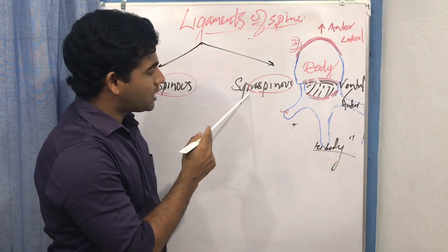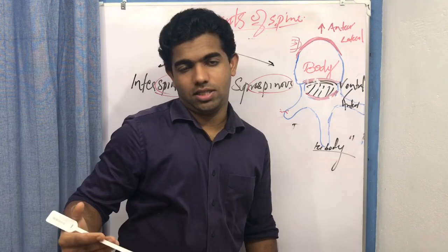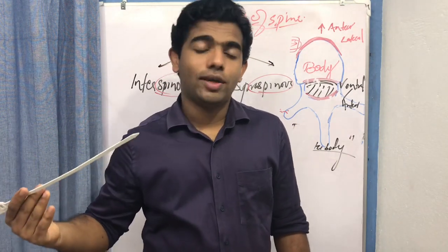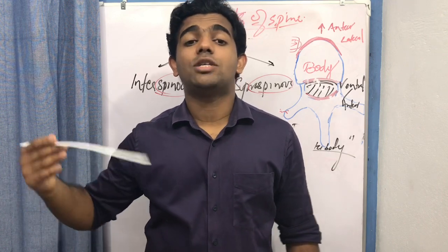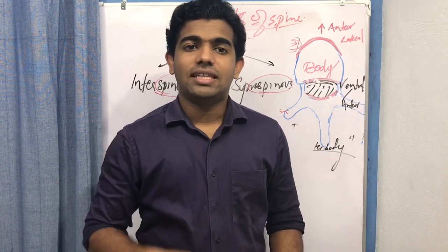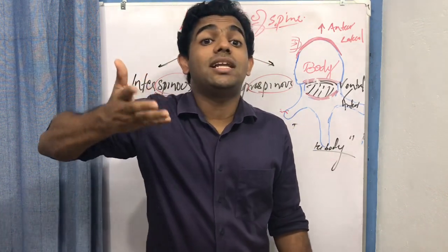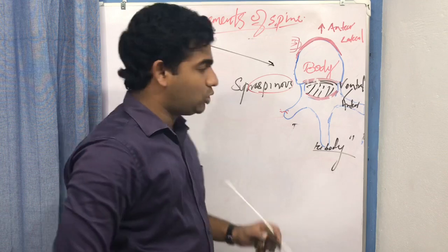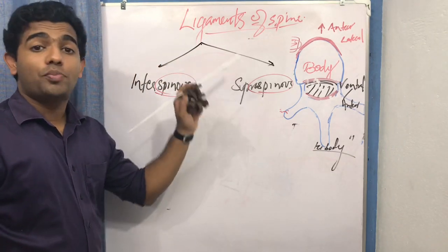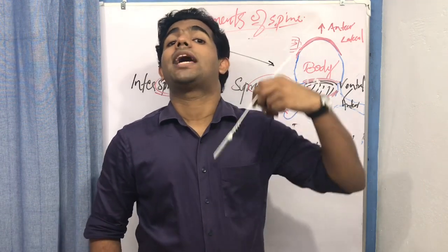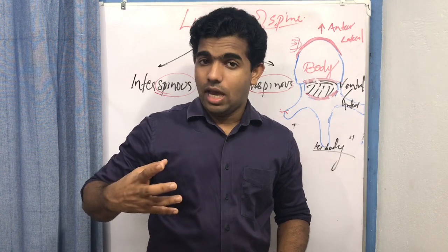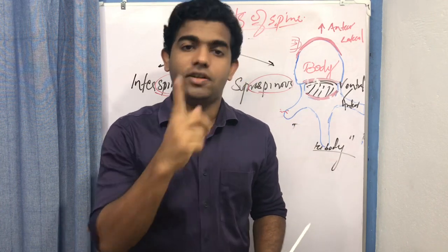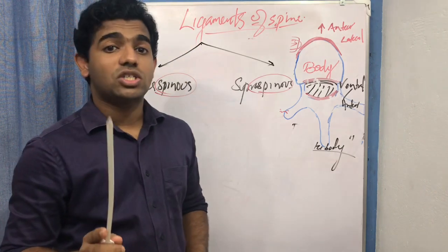The supraspinous ligament is very rich in mechanoreceptors, which means pathology or damage to this ligament can cause pain. Importantly, these mechanoreceptors can recruit spinal stabilizer muscles such as the multifidus muscle, contributing to active spinal stabilization.